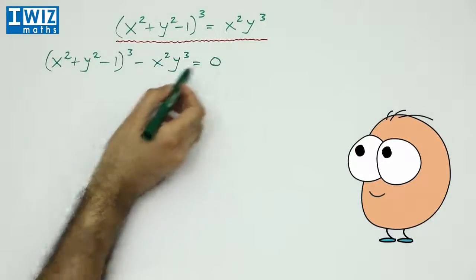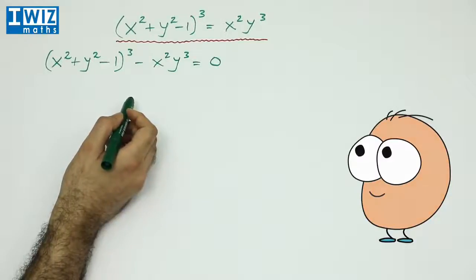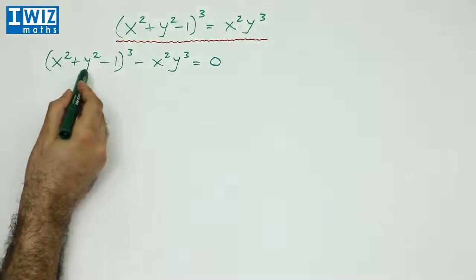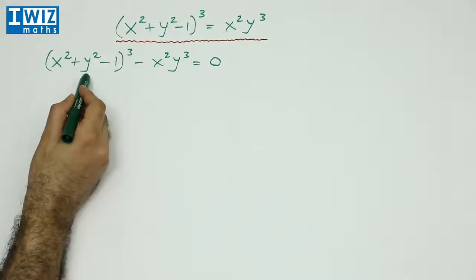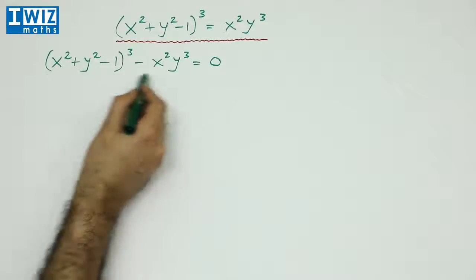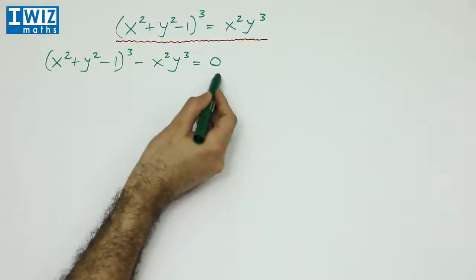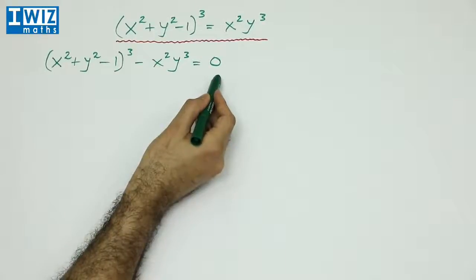So we have (x²+y²-1)³ minus x²y³ is equal to 0. Essentially what we are after are values of x and y such that when we plug in the values of x and y into this expression, the right hand side equals 0.